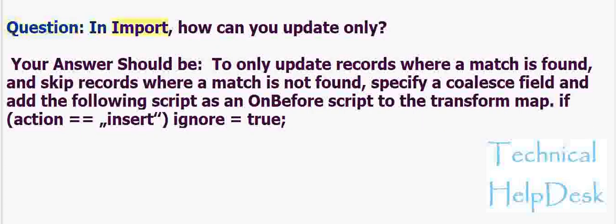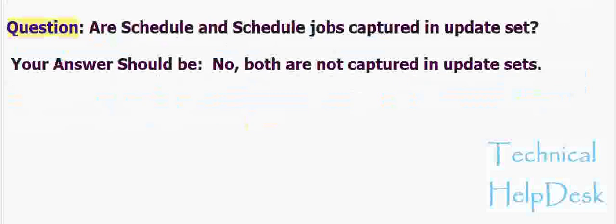Question: In an import, how can you update records only? To only update records where a match is found and skip records where a match is not found, specify a Coalesce field and add the following script as an on-before script to the Transform Map: if action equals equals insert, ignore equals true.